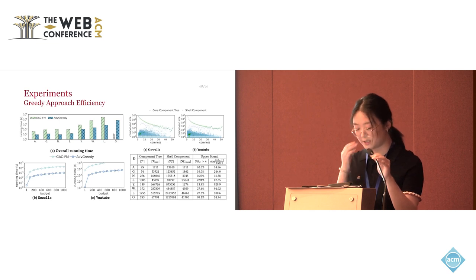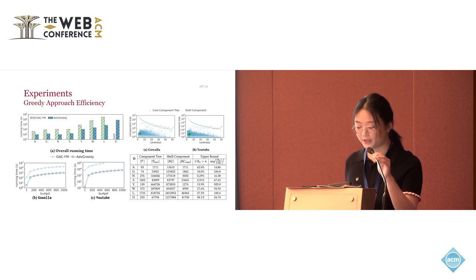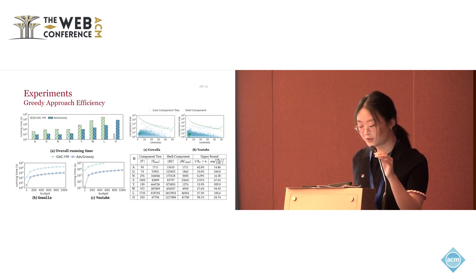They're called the shell component and the upper bound. The shell component is a data structure we use in our approach to organize the nodes by their coreness values. There is also a similar data structure called core component tree in the baseline method. We compare the number and the size of them. The results show that our shell component is more fine grained, which means our upper bound pruning techniques and our estimation of the resilience gain will be much more accurate.